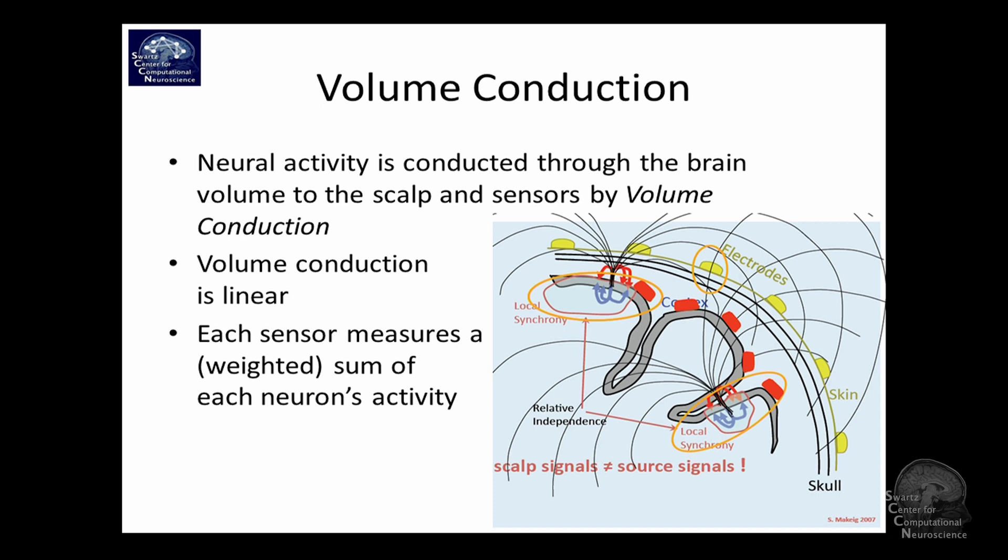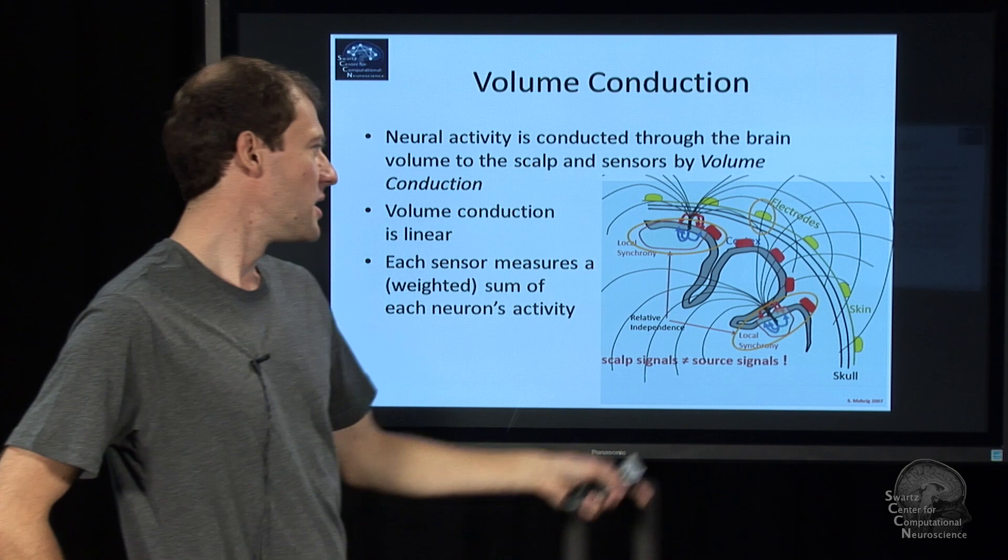And furthermore, everything, every source projects basically to every sensor. And so that's why you observe almost the same signal everywhere. But we are lucky because this mapping is linear, pretty much.